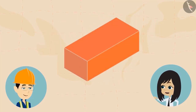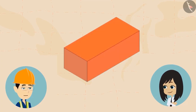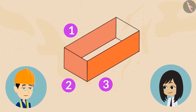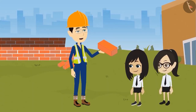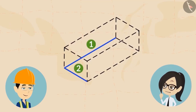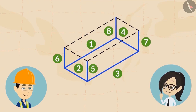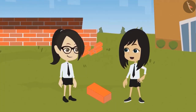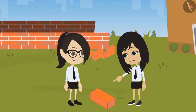This brick has so many faces. Can we count them? Every brick has six faces — one, two, three, four, five, and six. Now can you count the edges of this brick? It has twelve edges — one through twelve. There is one point to be noted about the faces and edges: did you notice all the faces and edges are straight?